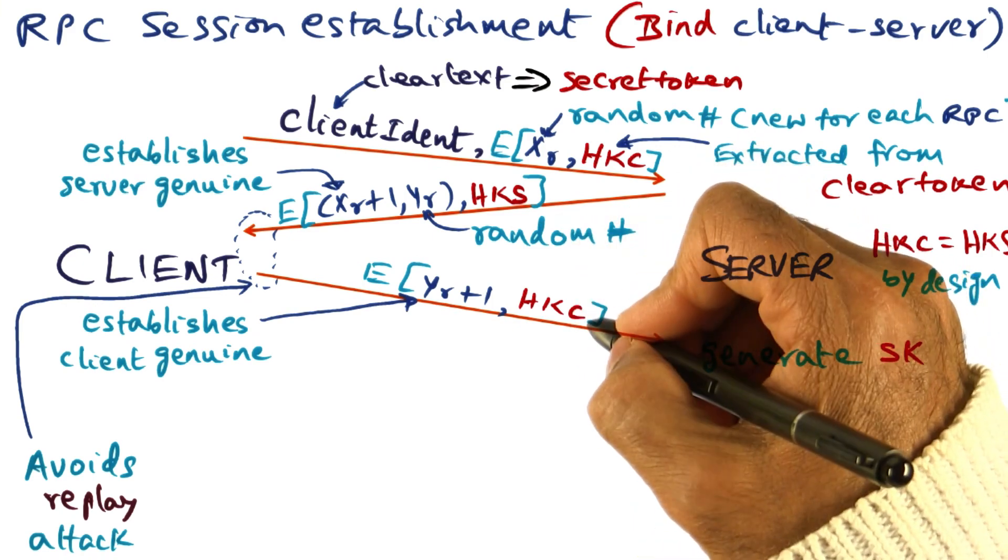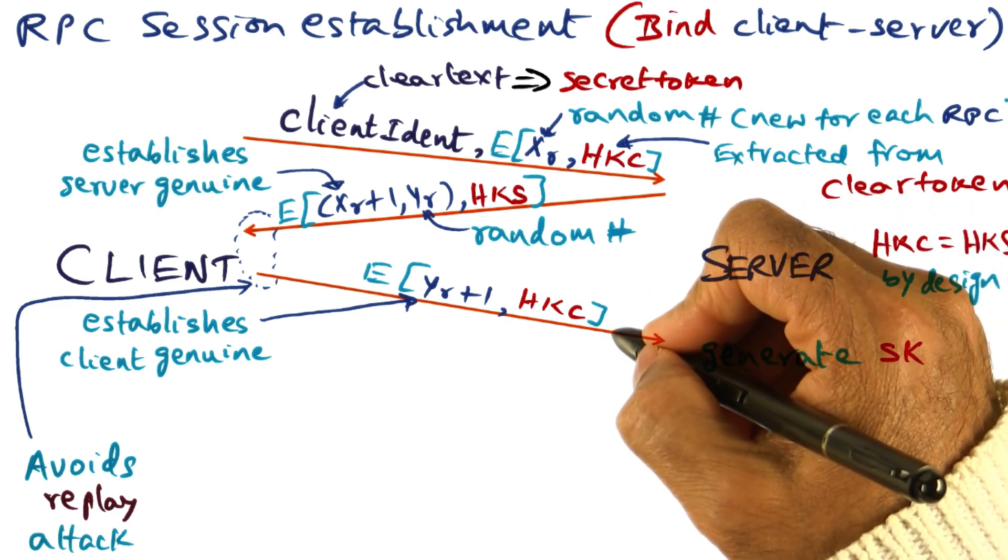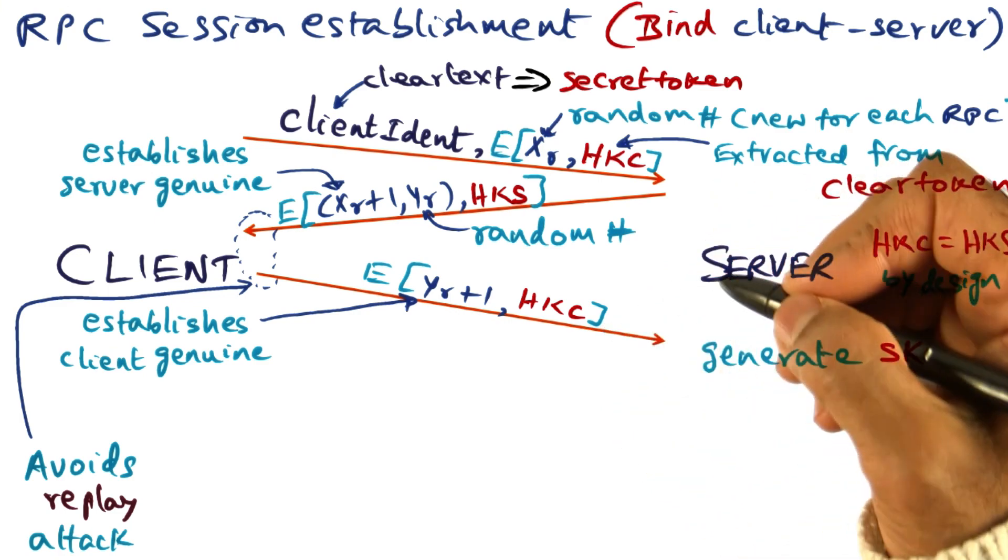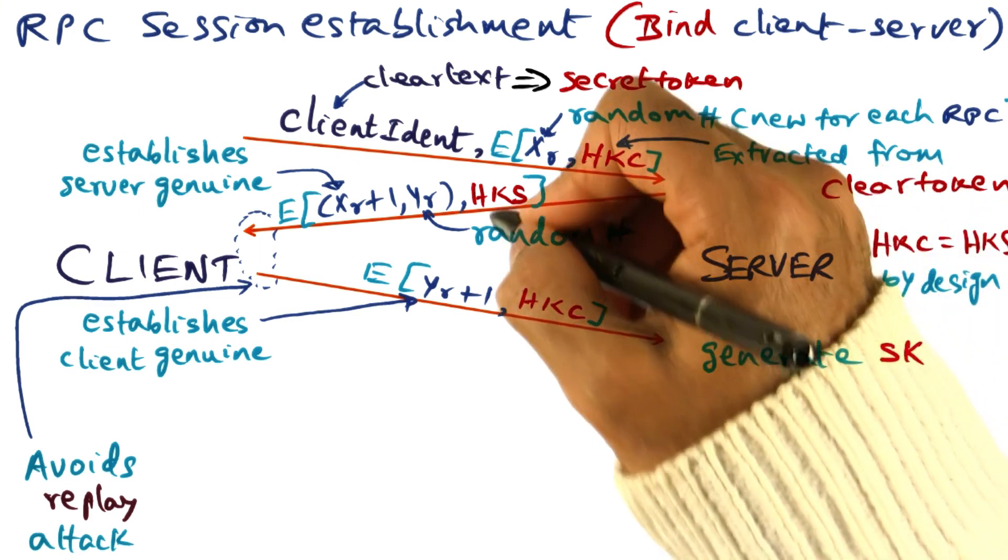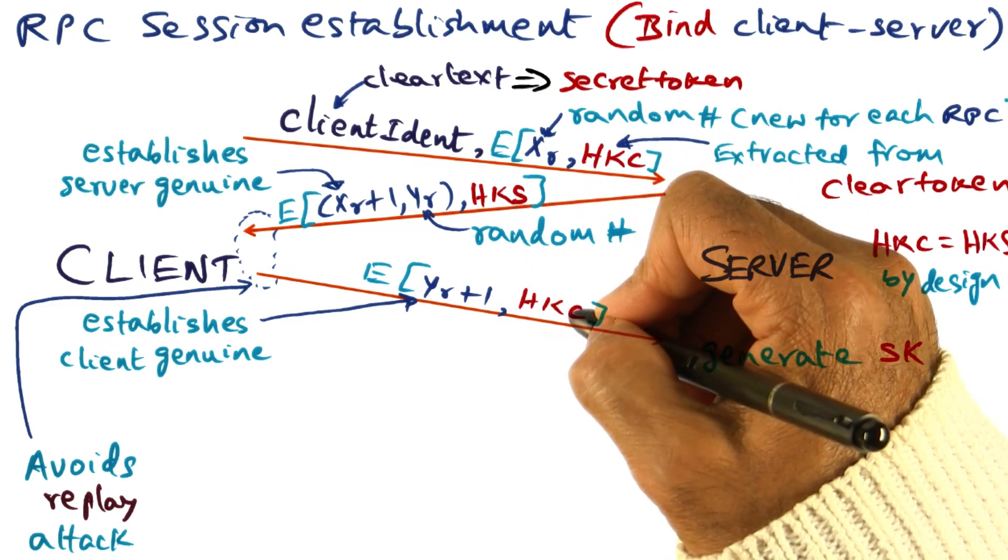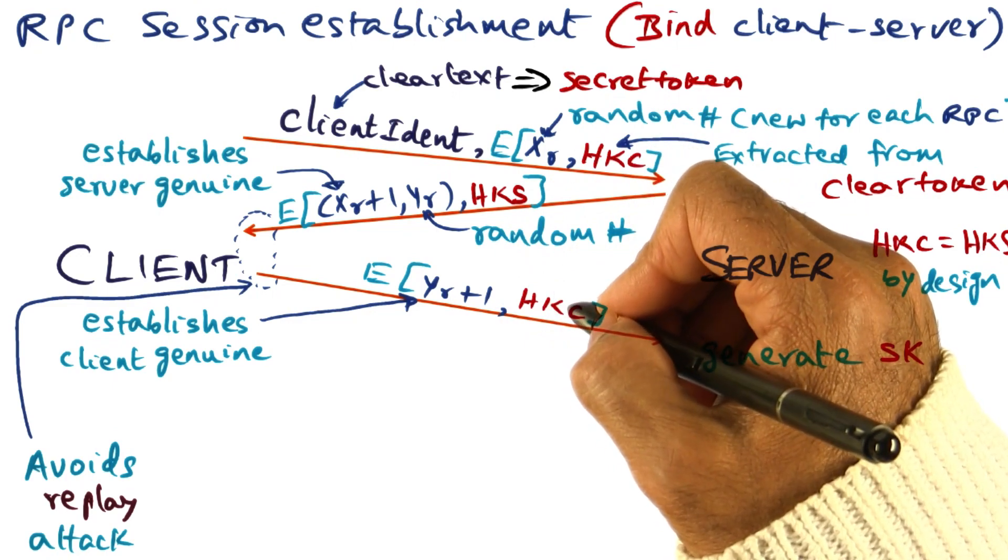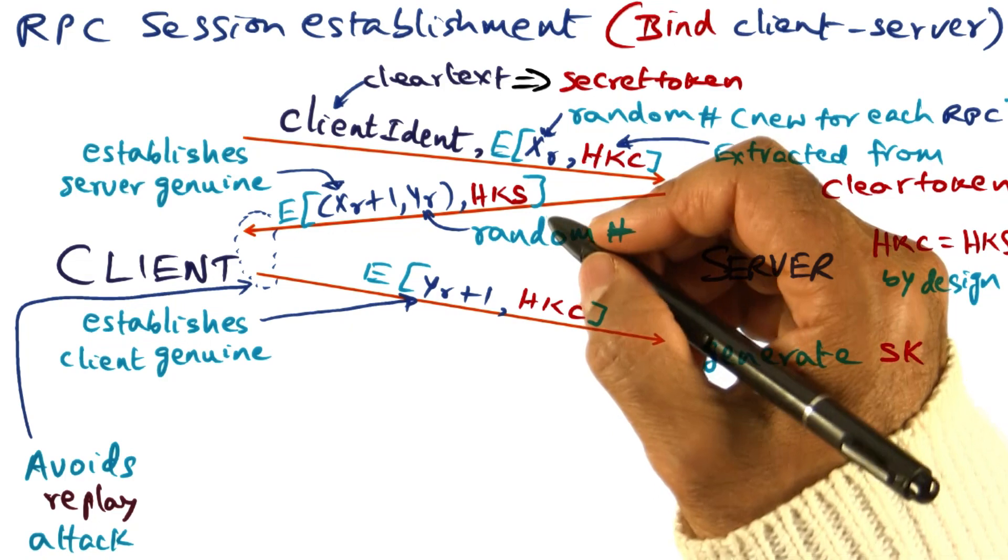And for all of those file system calls, you don't want to overexpose the use of this handshake key. And therefore, what the server does in the Andrew file system is use this handshake key only for establishing an RPC session. Let's say within a login session, you have three or four different RPC sessions with the server.